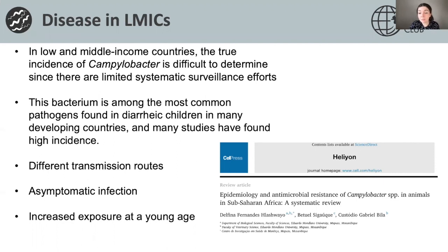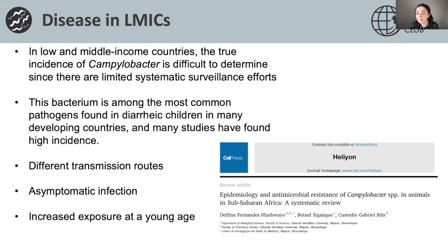This review provides an overview of the epidemiology of Campylobacter in sub-Saharan Africa from 2000 to 2019. The main objective was to describe the prevalence of Campylobacter specifically in animals in sub-Saharan Africa, and also to identify antibiotics to which different Campylobacter isolates were resistant to. Overall, Campylobacter infections are common in animals in sub-Saharan Africa, mainly in cattle and chickens, and poor hygiene seems to be the major contributor to the spread of bacteria in the region.